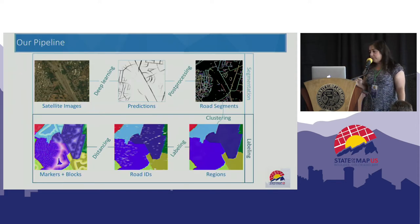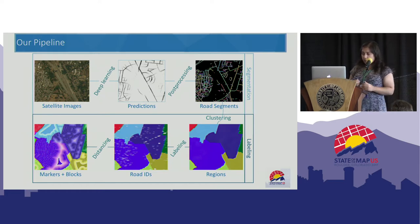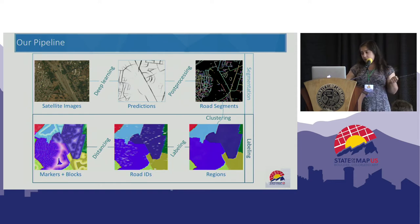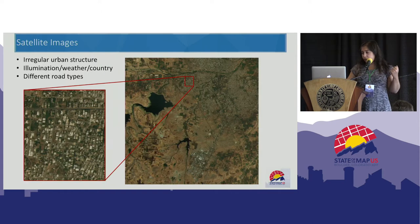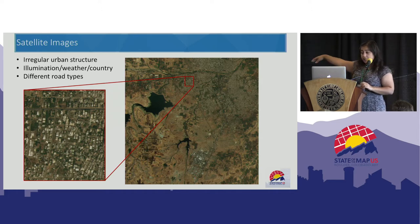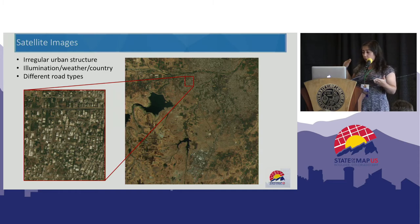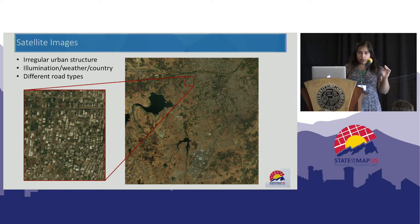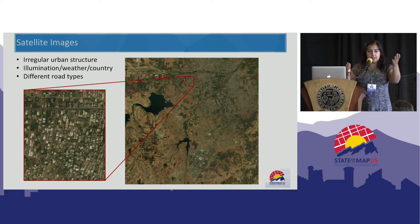This is our pipeline. We start by extracting road masks from satellite images using deep learning. Then we find individual road segments from those predictions. Then we create regions from the road graph and label the parcels by distance fields. This image is taken from a developing country — you can see the urban structure in the satellite image is not easy to detect and organize, with different weather and illumination conditions. Drishti gave an awesome talk about road extraction, and this is based on that work.